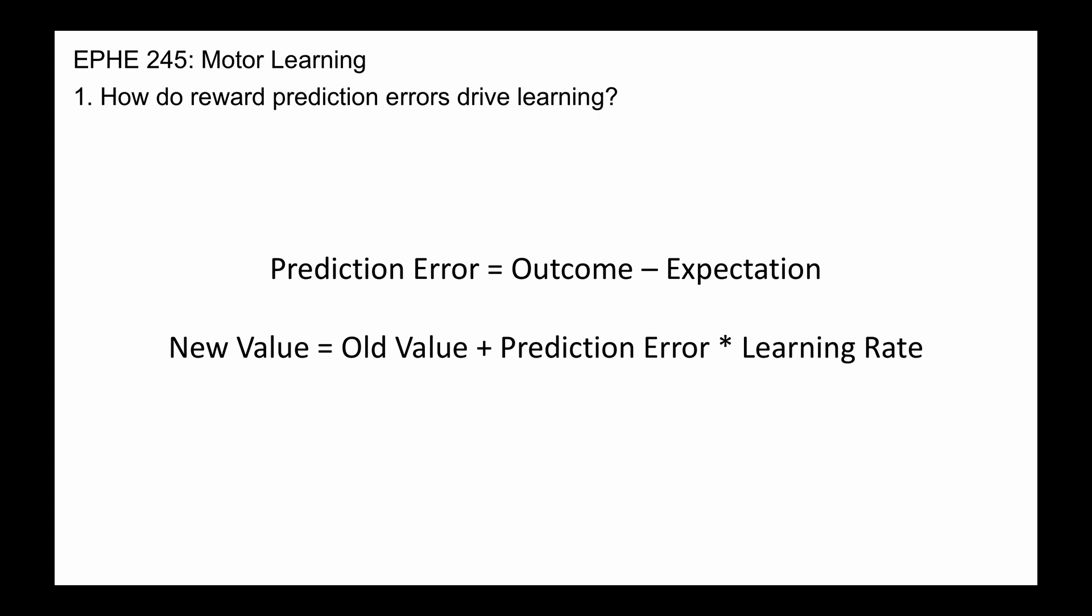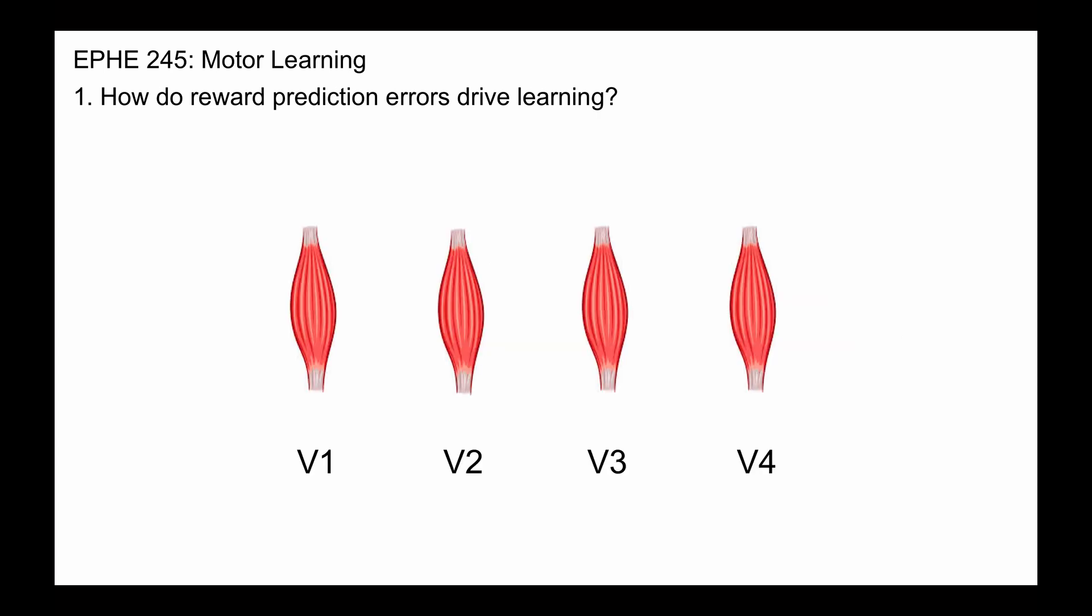Now how does that actually drive learning in terms of a motor skill? Simply put, when we execute a motor skill, we're making a decision to choose certain muscles, and within the muscles, certain muscle spindles, to execute the skill.